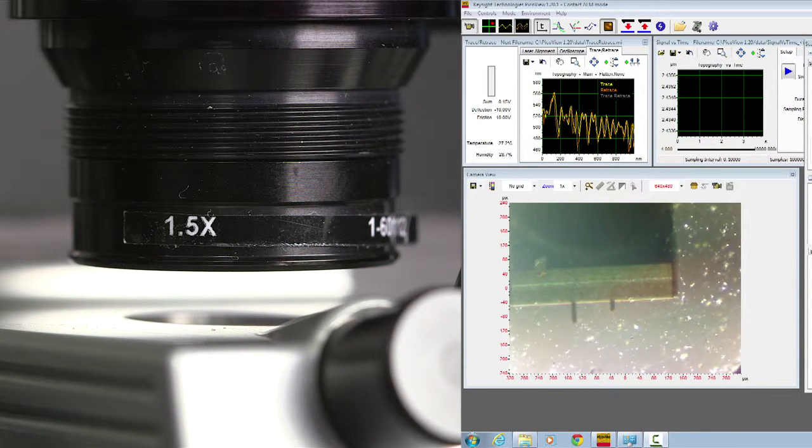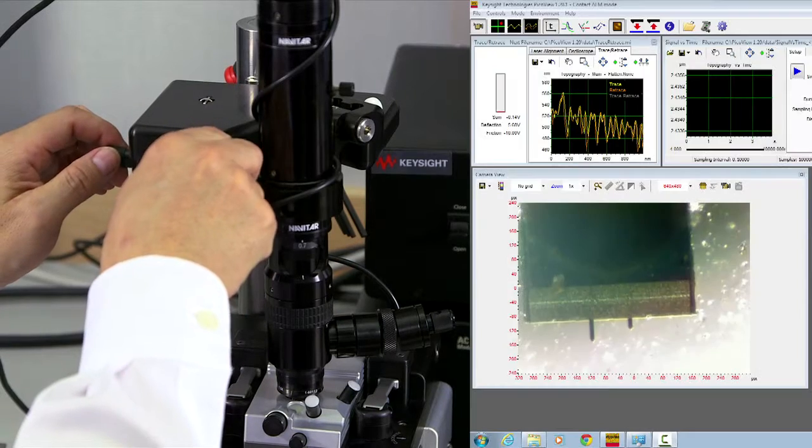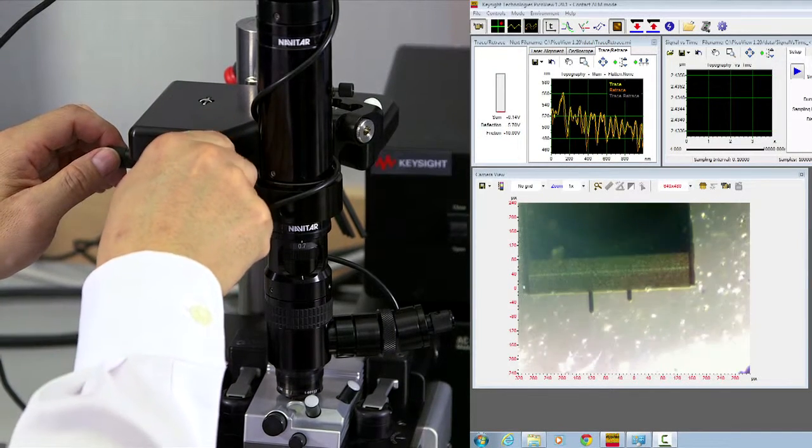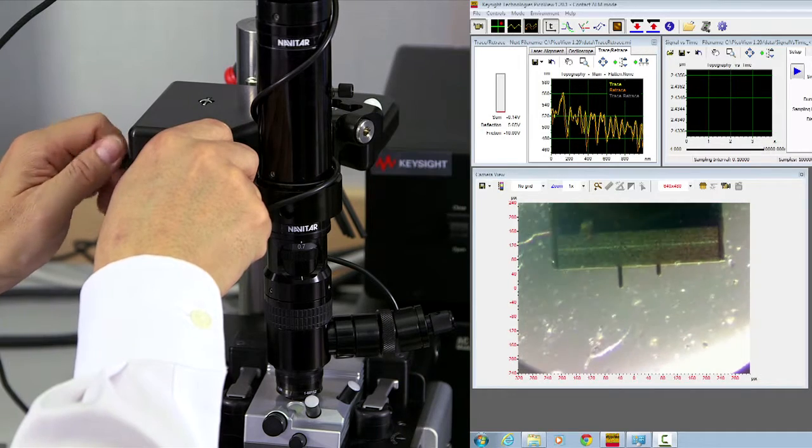Now, you can see that the cantilever tip is coming to focus and notice the distance between the optical microscope objective and AFM scanner is very close. It's about five millimeter in distance. Here, translation again. And move the cantilever tip into the center of the view.